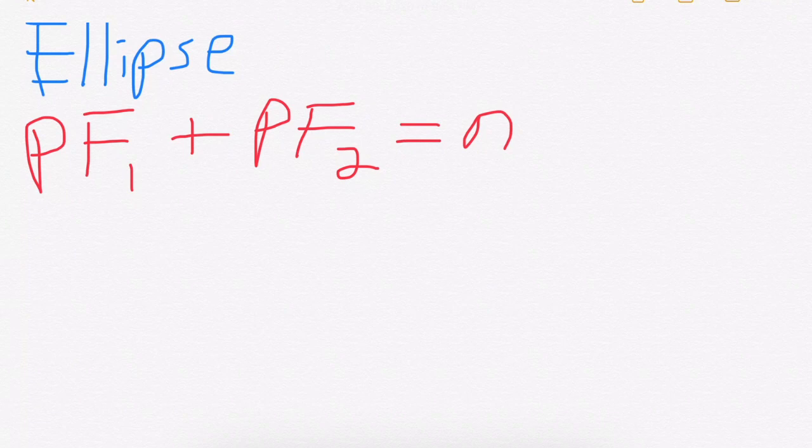Now that we've seen that an ellipse is just a transformed version of the unit circle, we can actually go straight from the geometric definition to an algebraic definition.